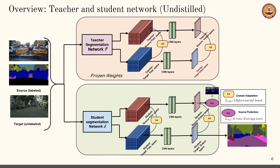Our pipeline consists of two neural networks: a cumbersome teacher segmentation network and a compact student segmentation network. RGB images from both source and target domains, and the segmentation maps for the corresponding source domain images, are the inputs to the network. The problem is completely unsupervised in the target domain, i.e., no labels are available for the target domain. First, the teacher network is initialized with parameters trained for domain adaptation on a source-target dataset pair. This teacher network, frozen after training, is then used to distill knowledge to the compact student network. The task of the student network is to learn a domain-adaptive set of parameters while taking advantage of the mastery of the teacher network.